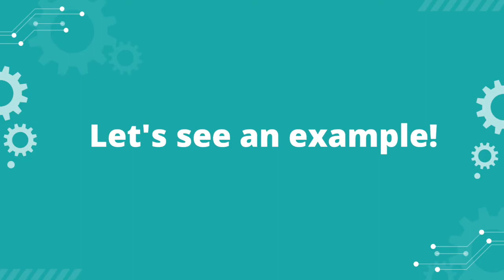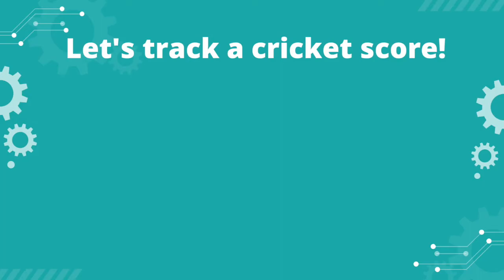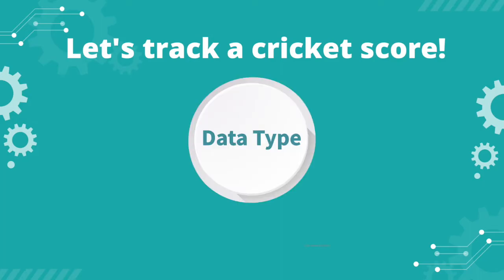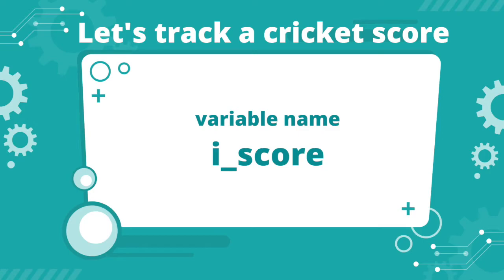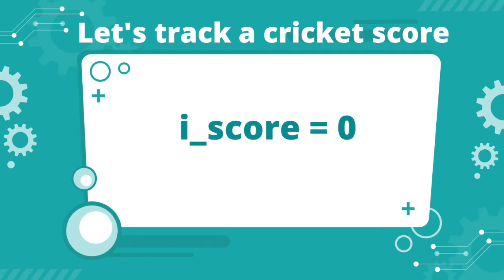Still confused? Let's see an example. We want to use a variable to save a cricket score. It will be of data type integer as it is a number. Now we need a name for the variable also, so let's call it i_score. We start off i_score with the value zero, so here we are assigning a value zero to i_score.